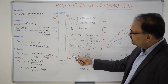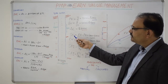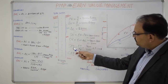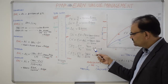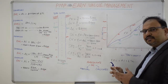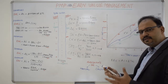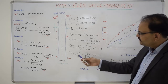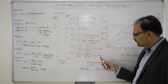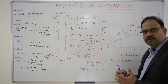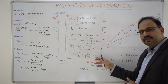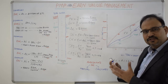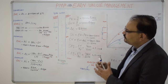SPI and CPI are another way of representing the same matrices, where the value is measured against one. For this example, SPI is coming out to be 0.8, which is less than one, and that represents that the project is behind schedule. Had it been greater than one, that would represent that the project is ahead of schedule. Similarly, CPI is coming out to be 0.6, which is less than one — that shows that cost has overshot or is over budget. Had it been greater than one, that would show the project is well within budget.